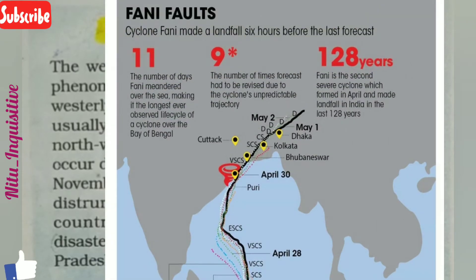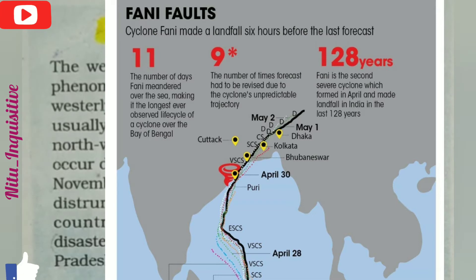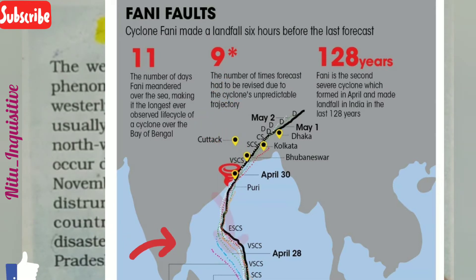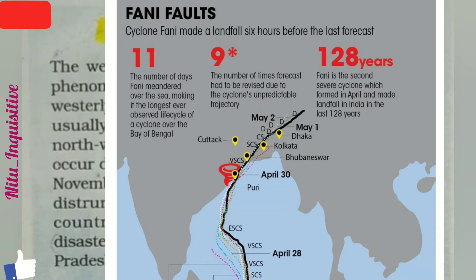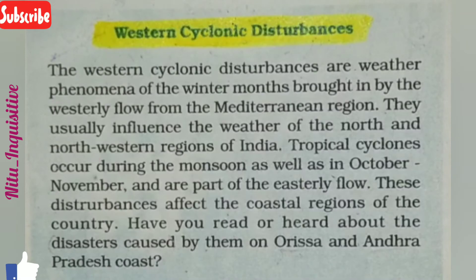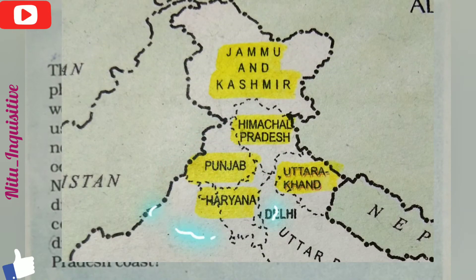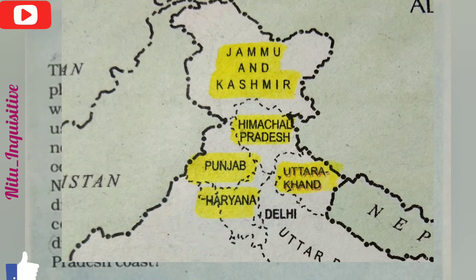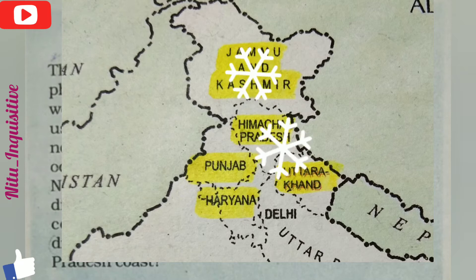Western Cyclonic Disturbance affects the coastal regions of India, mostly Odisha, Andhra Pradesh, and Tamil Nadu, because of the disasters caused by them. But the best part of this Western Disturbance is that it brings rainfall in Punjab, Haryana, and Rajasthan.